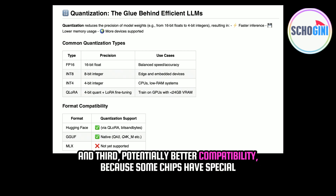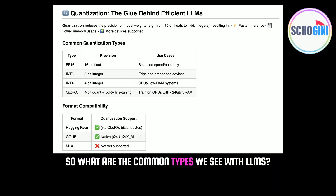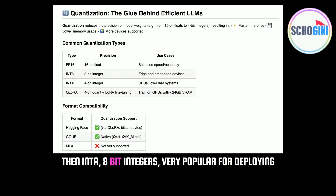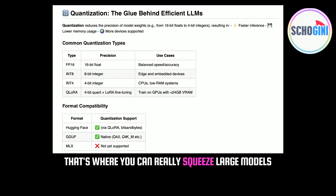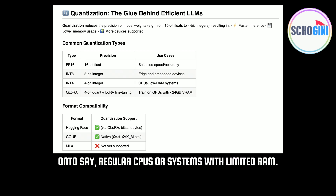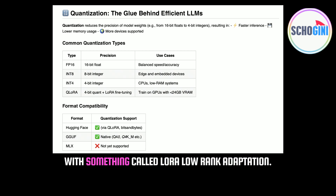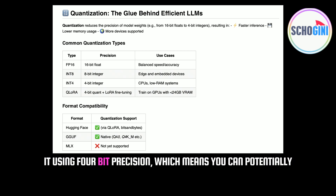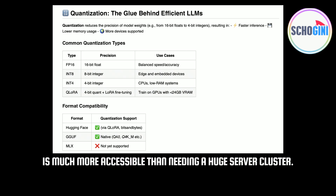The common types: FP16 — 16-bit floating point — is often a good balance, keeps most of the accuracy, gives some speedup. Then INT8 8-bit integers, very popular for deploying on edge devices, phones, that sort of thing. And then you get down to INT4 4-bit integers — that's where you can really squeeze large models onto regular CPUs or systems with limited RAM. There's also a really interesting technique called QLoRA. It combines 4-bit quantization with LoRA — low-rank adaptation — a clever trick to fine-tune just a small part of a huge model very efficiently.